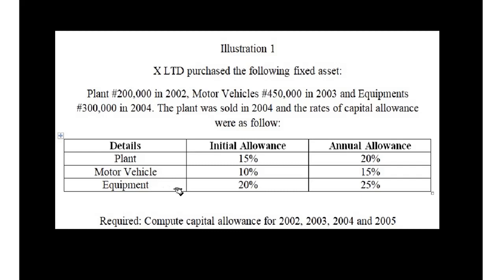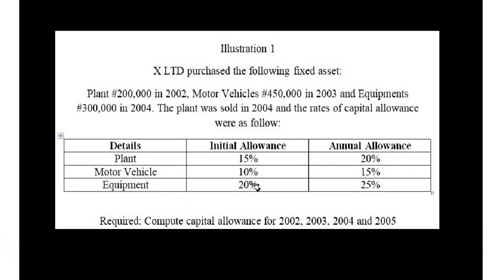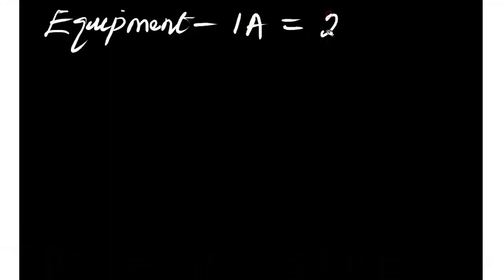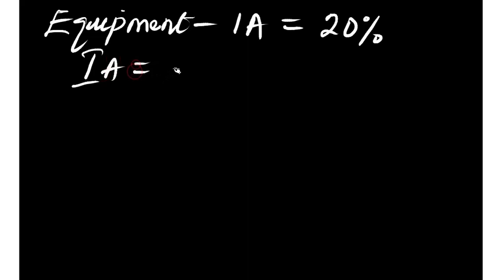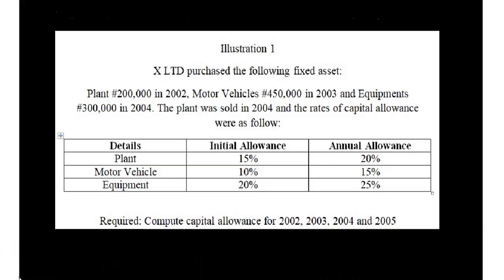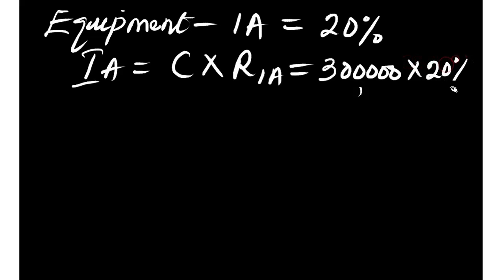Now for equipment: the initial allowance rate is 20% and the annual allowance rate is 25%. Initial allowance = cost × rate of initial allowance. The cost of equipment is 300,000, so: 300,000 × 20% = 60,000. The initial allowance for equipment is 60,000.